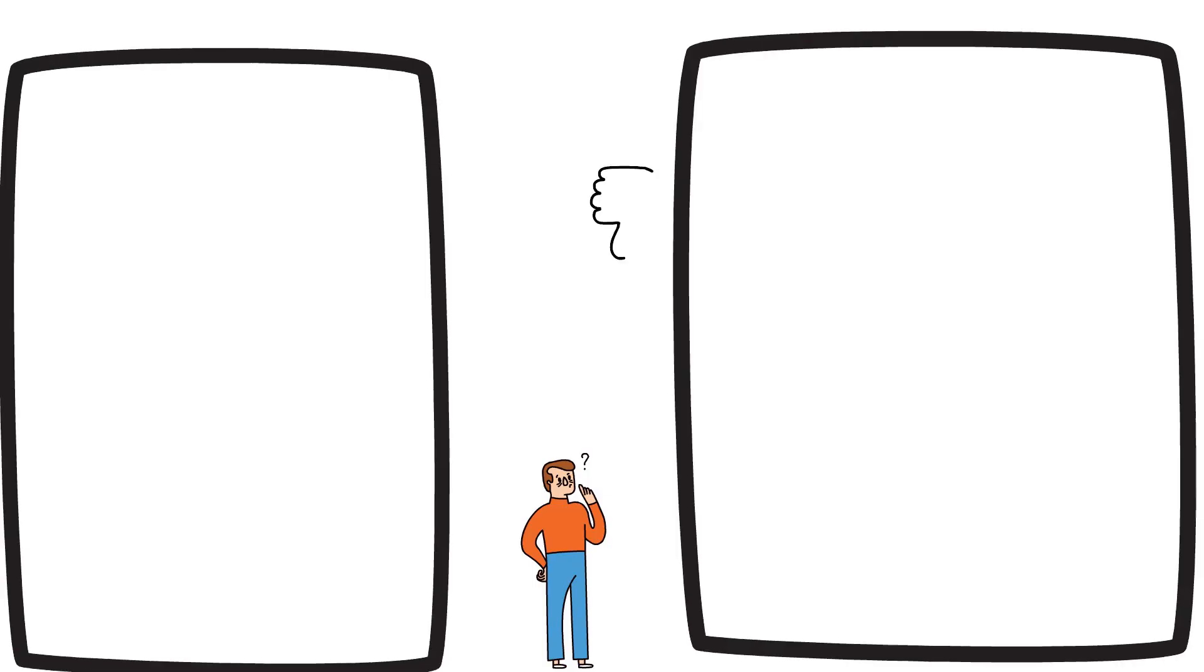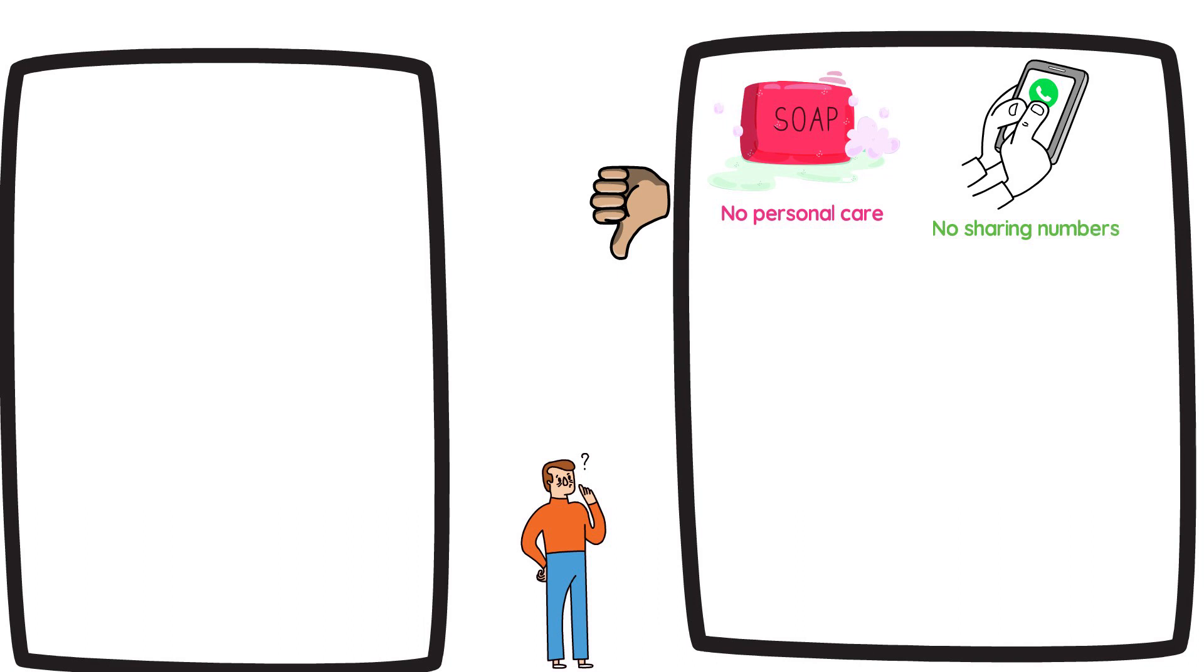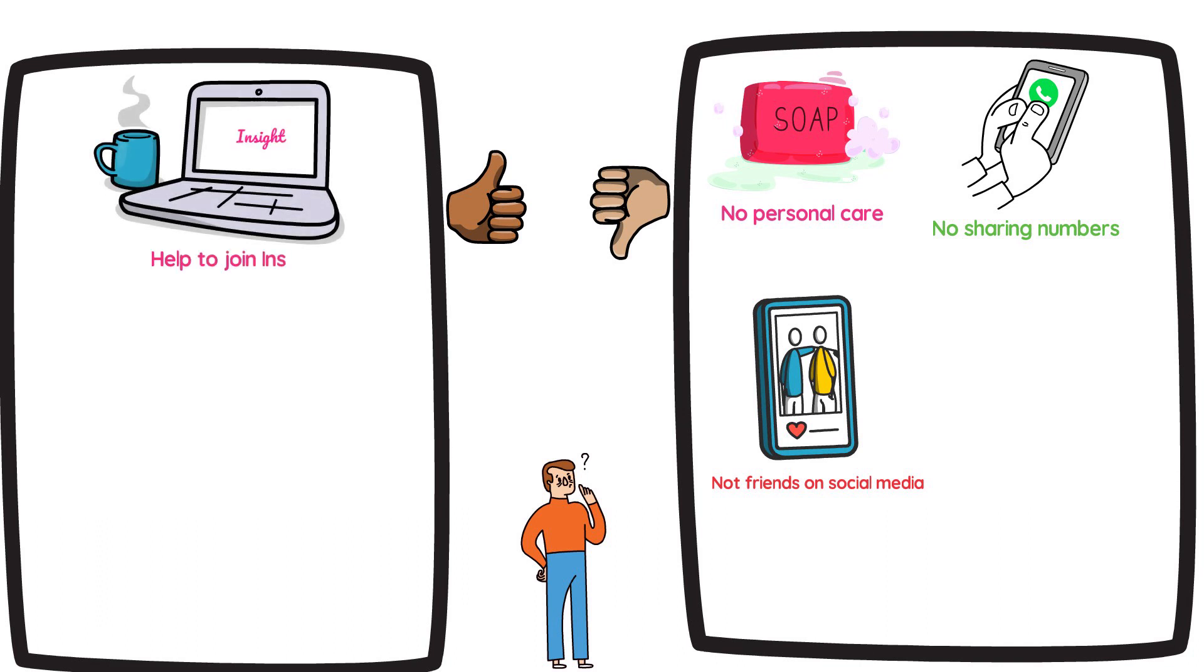Volunteers cannot do any type of personal care. They also can't swap mobile numbers and they can't be friends on social media. But we can register them onto Insight as a way to connect. They can't give any type of medication and they can't drive anyone in their car if they have one or in your car as they don't have the right insurance to cover this.